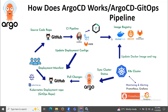Let's understand the workflow diagram. First, the code is pushed to the code repository like GitHub, GitLab, and Bitbucket. Then the code is built and tested using a CI platform like Jenkins, GitLab CI, and GitHub Actions.